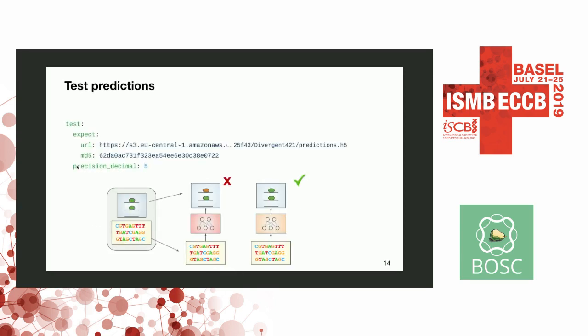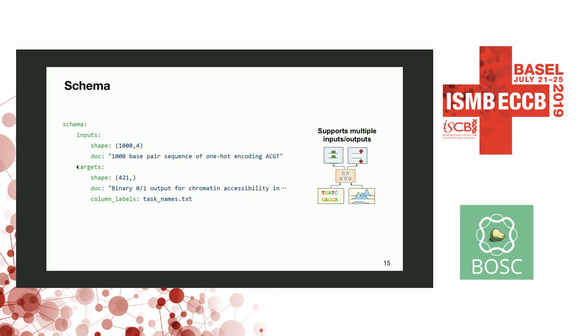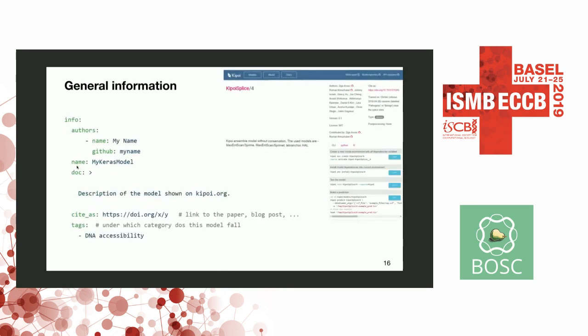We check the predictions, so contributors have to provide test files — an HDF5 file in which inputs and outputs are provided — and then we make sure that the predictions are reproducible. You also describe the schema, meaning the dimensions of inputs and outputs of your model, as well as some descriptions for users to know what they need to put in and what they will get out.